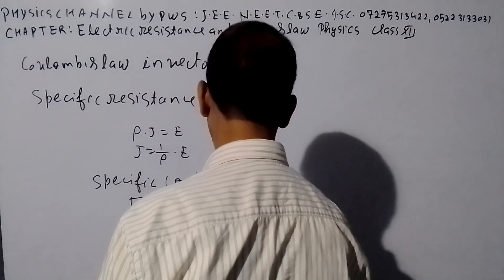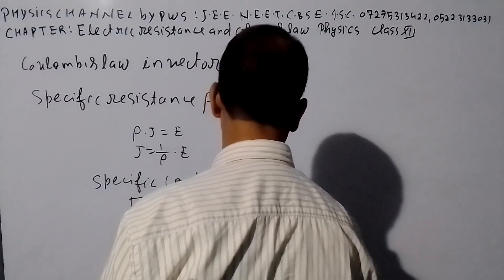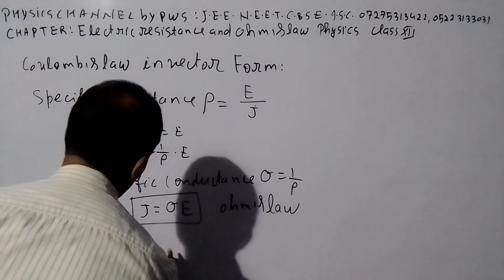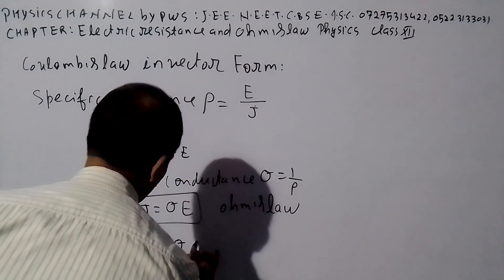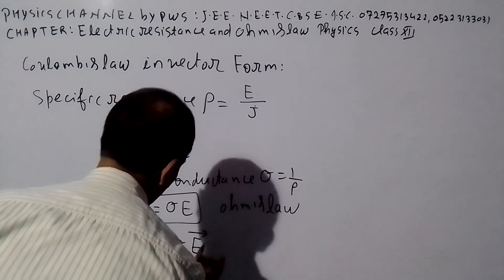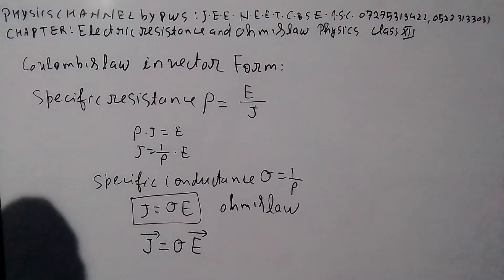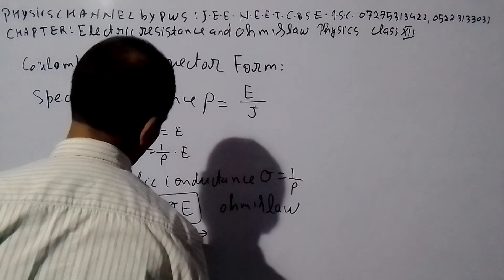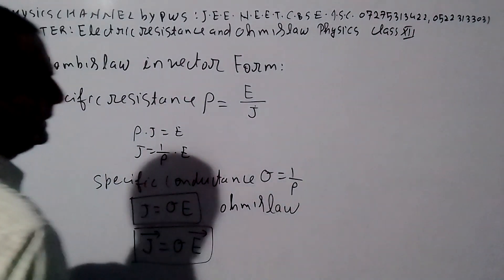Okay, now this is vector form. Vector form. J is the vector quantity, E is the vector quantity. Sigma is the scalar quantity. So this is the electric field.